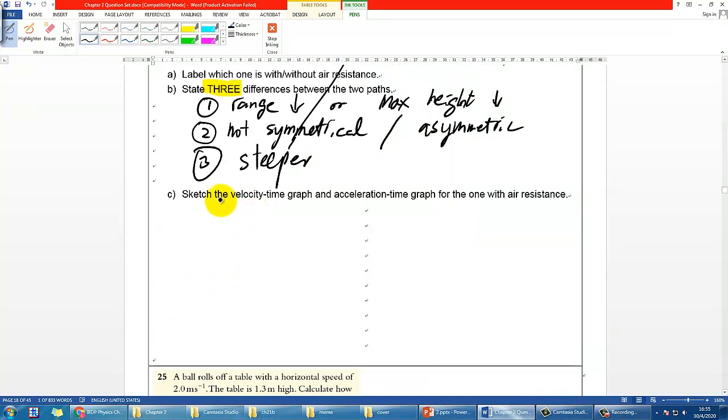Number three is to ask you to sketch a velocity time graph and acceleration time graph for the one with air resistance. Maybe I can draw you the one without air resistance first and then you can try to do the other one. In fact this is one of the exercises that we did earlier and I'm pretty sure that you should still remember it. So for vx and vy let's do it separately.